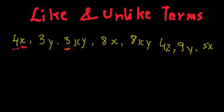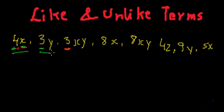Like terms are terms which have the same variable part — we have to look at only the variable parts. Like if you see the term 4x and 3y: in 4x the constant is 4 and variable is x, and in 3y the constant is 3 and variable is y. So what are like terms? Like terms are terms which have the same variable part.